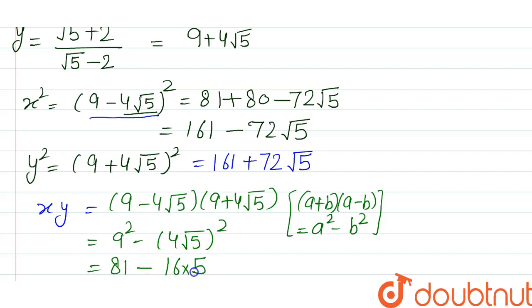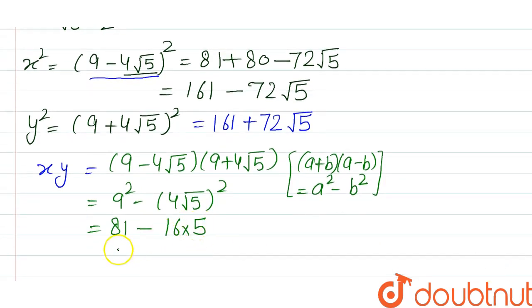9 squared is 81, minus 16×5 = 80, so finally the product we are getting is 1. xy = 1.